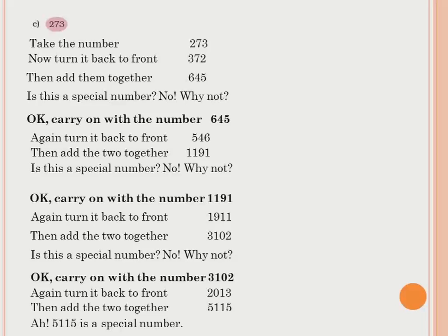Isn't it interesting? You can take many numbers and try whether you are getting the special number or not. Just proceed the same process until you get the special number. The meaning of a special number: front to back and back to front — both should be the same.